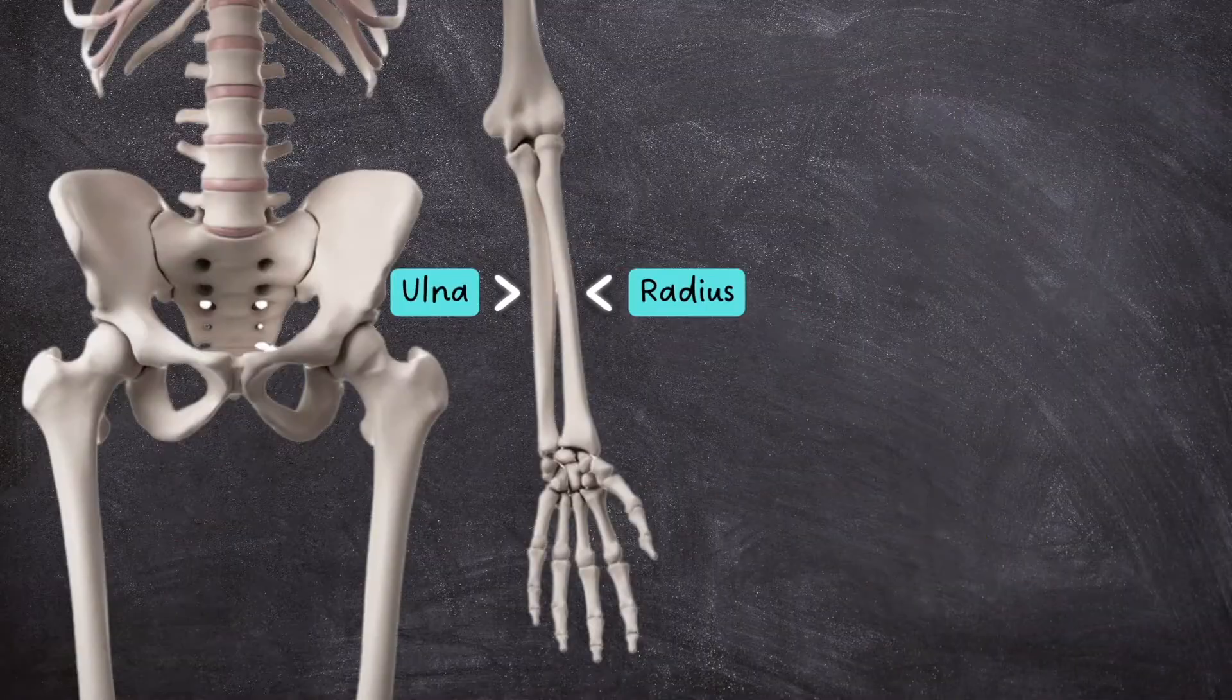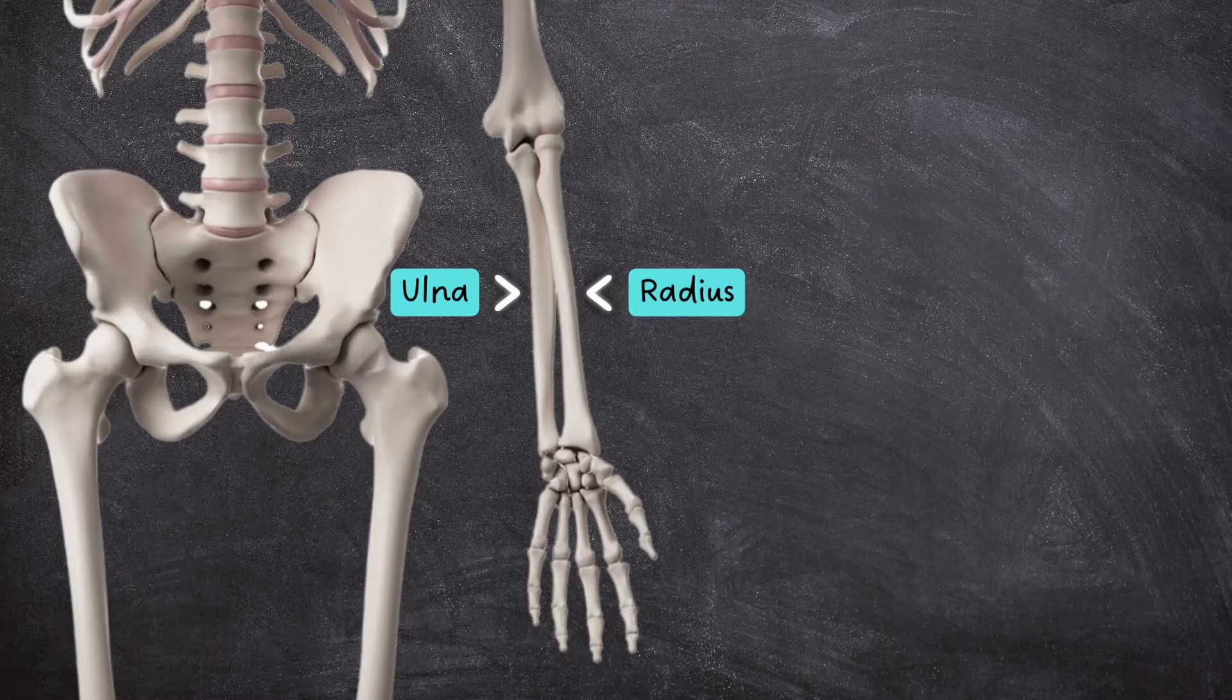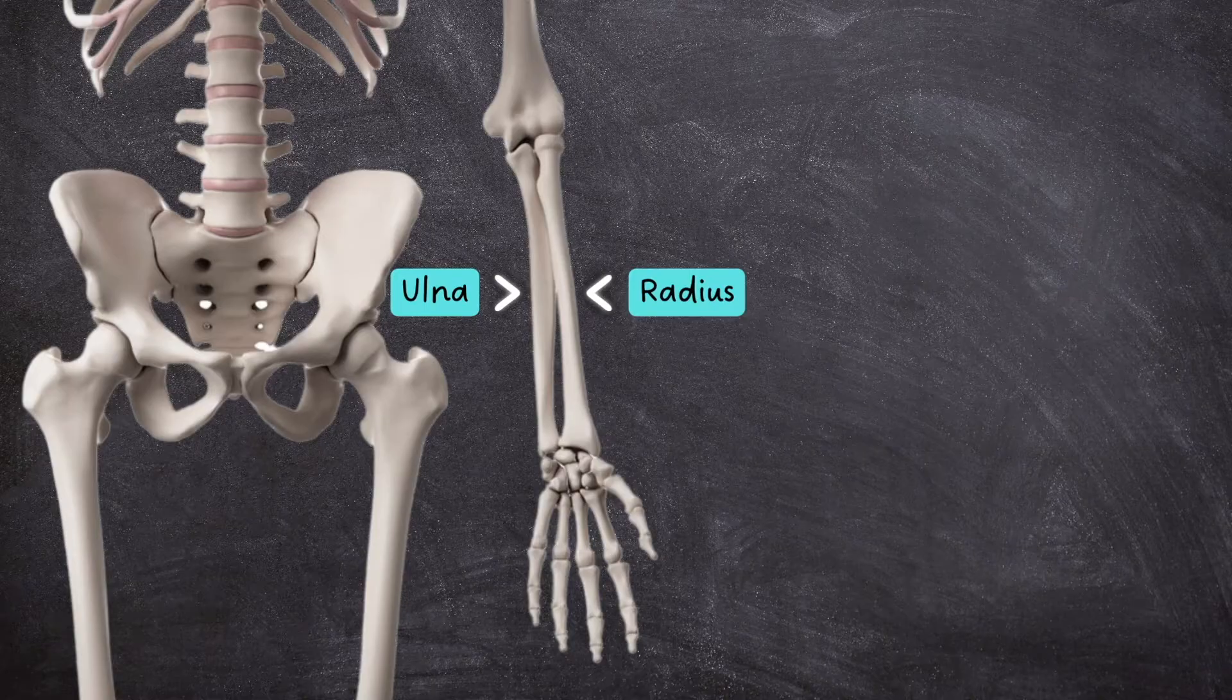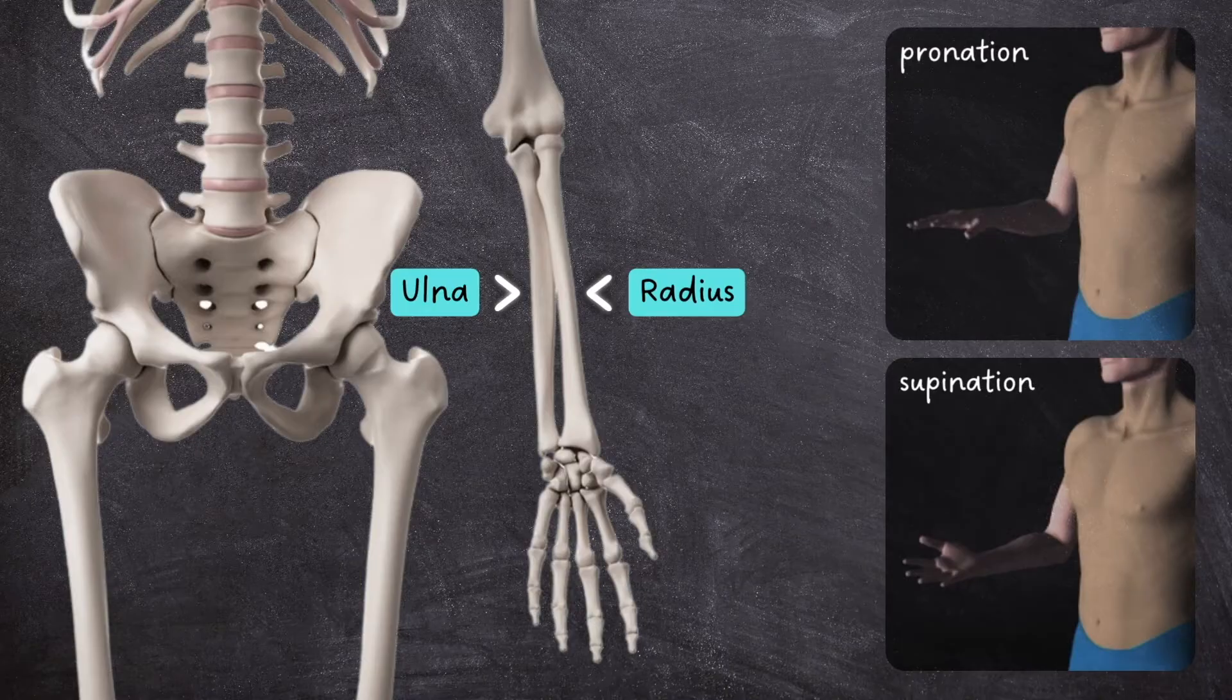At the elbow joint, the humerus joins with the radius and ulnar bones, and in the anatomical position, where the palms are facing forwards, the radius sits in line with the thumb. Their relative position is not fixed, however, as the radio-ulnar joint allows us to pronate and supinate the forearm.